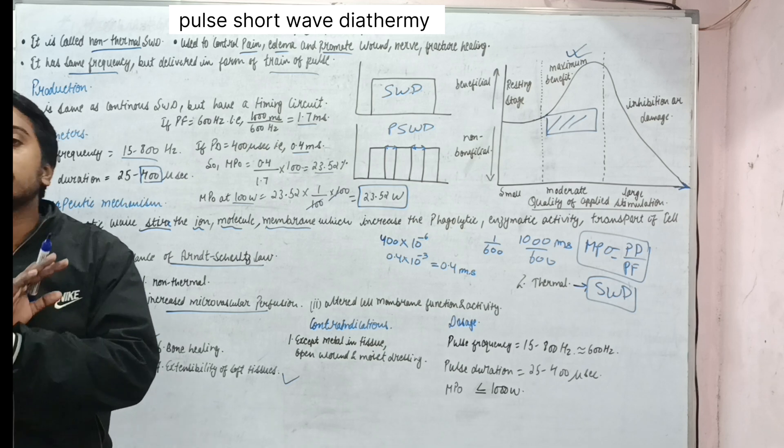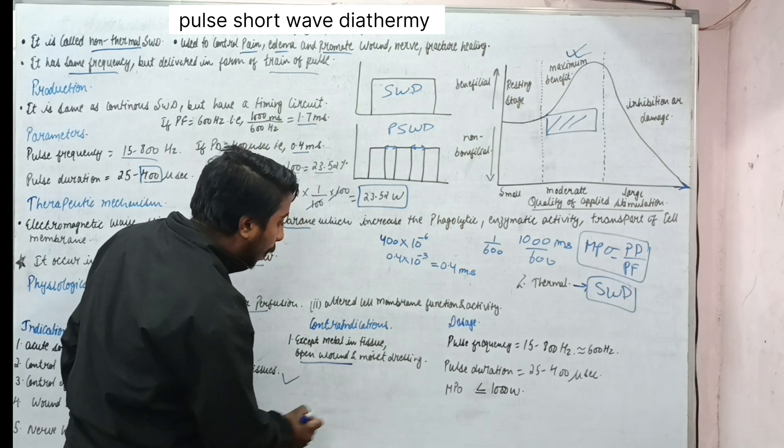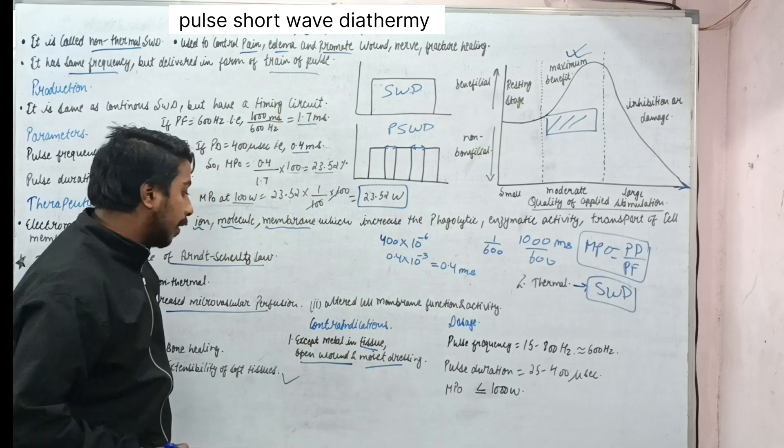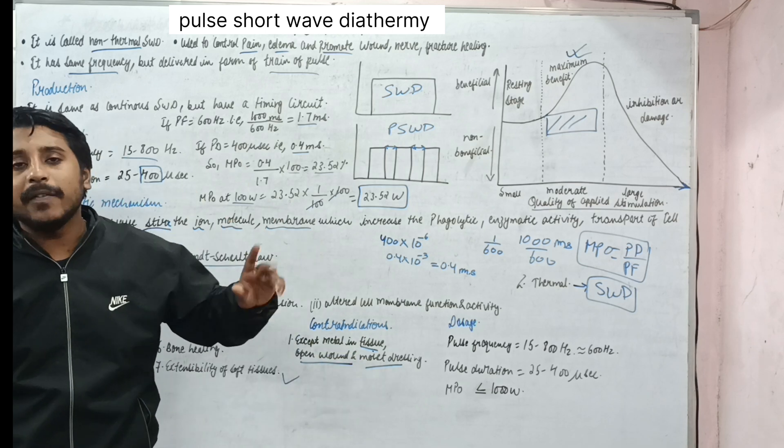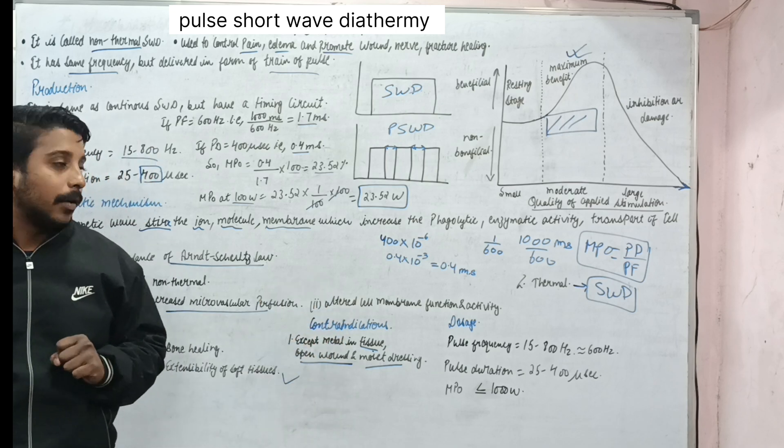Contraindication. Contraindication same as SWD except open wound, moist dressing, and metal in tissue. Why? Because these were due to heating effect and this does not have heating effect. Pulse SWD does not cause burn.